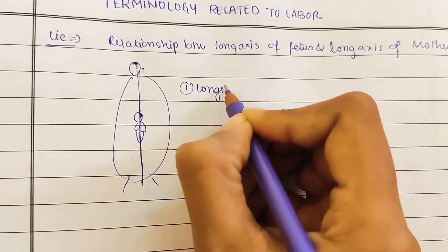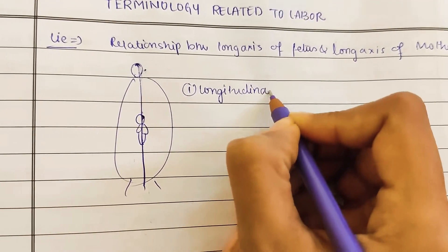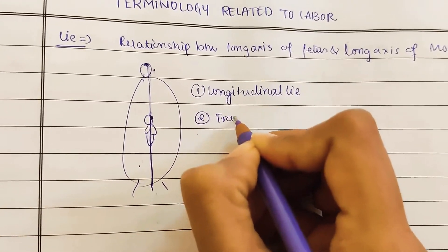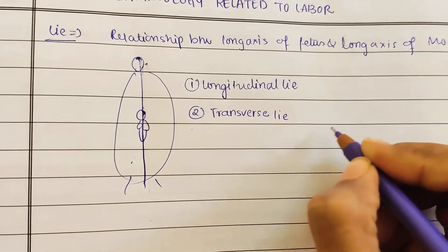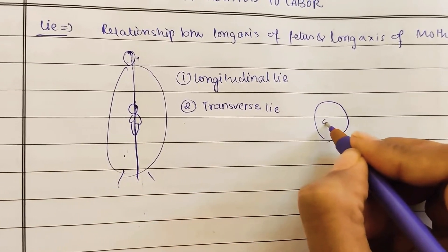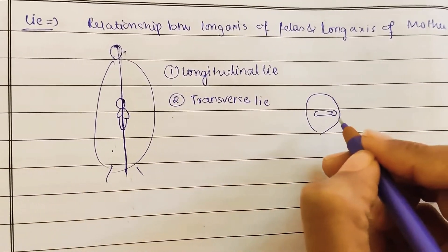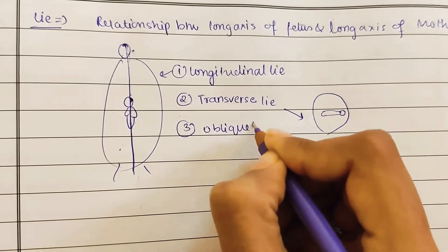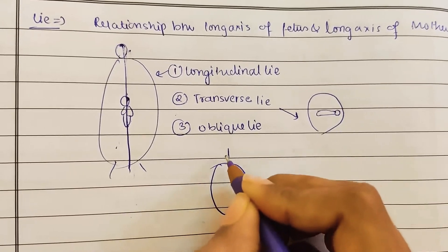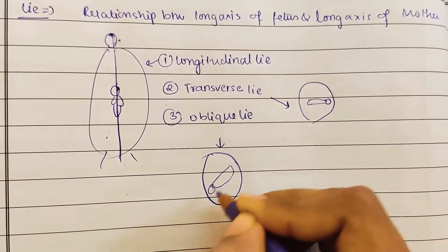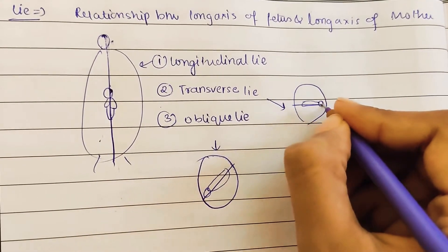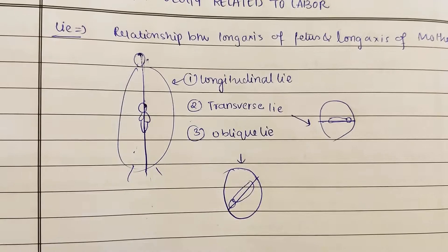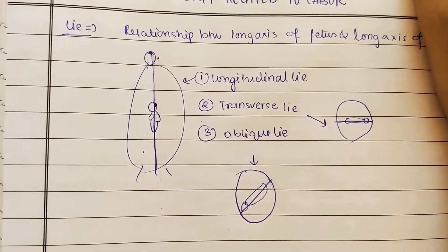Lie is divided into three types. The first is longitudinal lie, as drawn. Next is transverse lie - the baby is horizontal, with the head to the side. This is called transverse lie. The third type is oblique lie, where the baby is positioned diagonally. Drawing a line through each position makes it clear - longitudinal, oblique, and transverse lie are the three types of lie with respect to the mother.